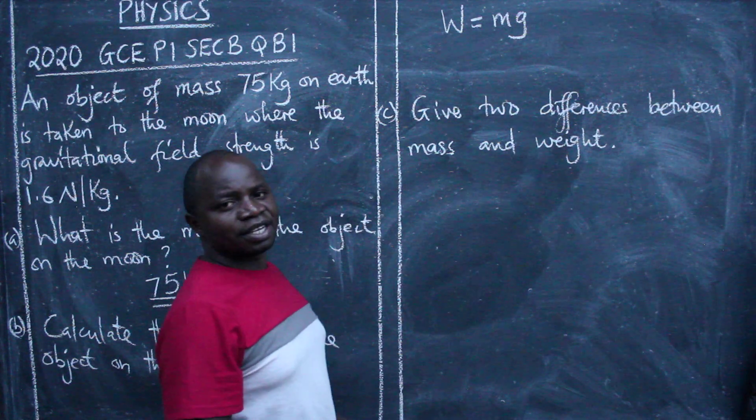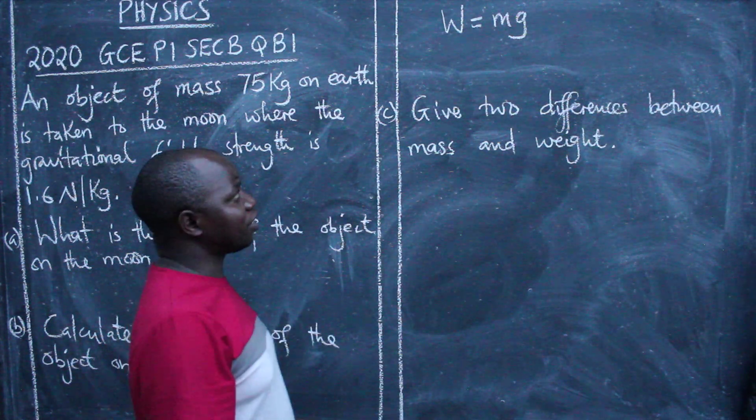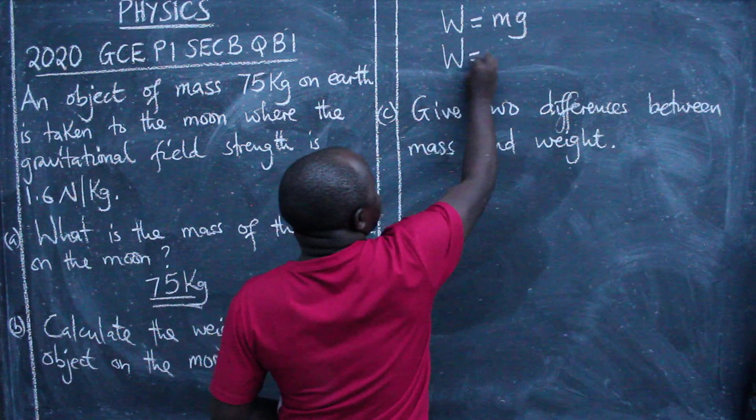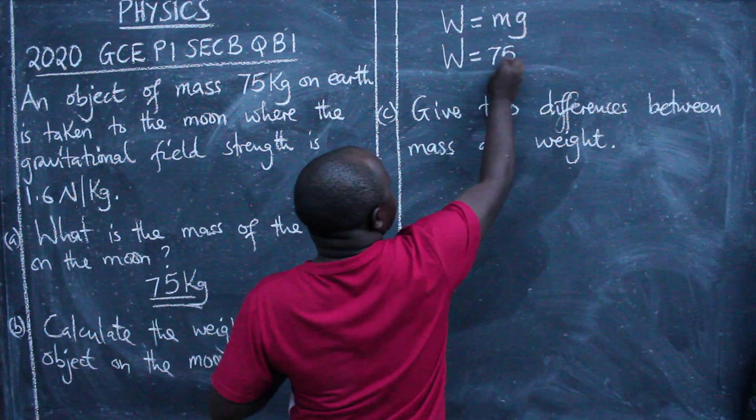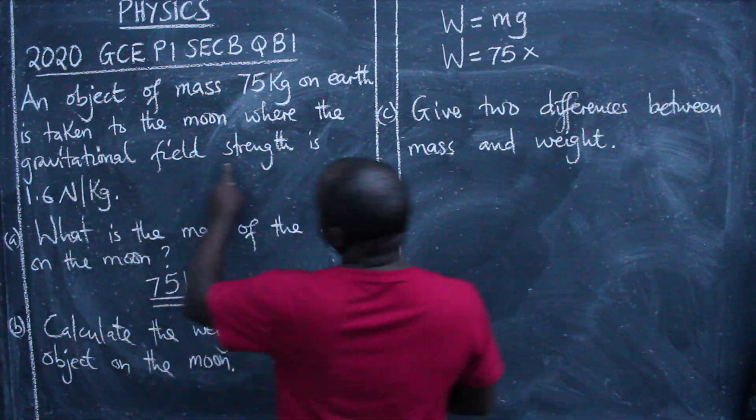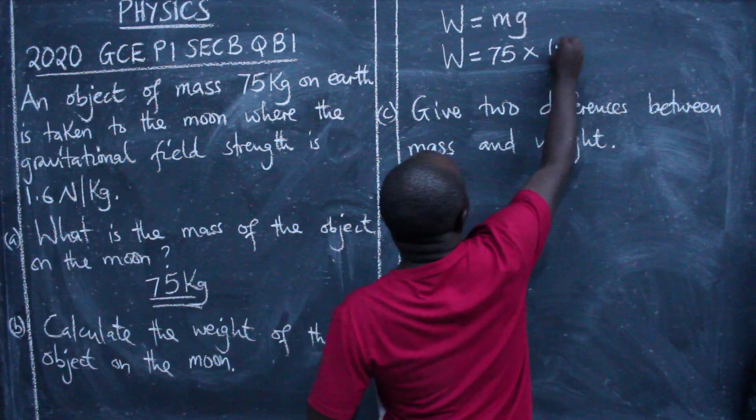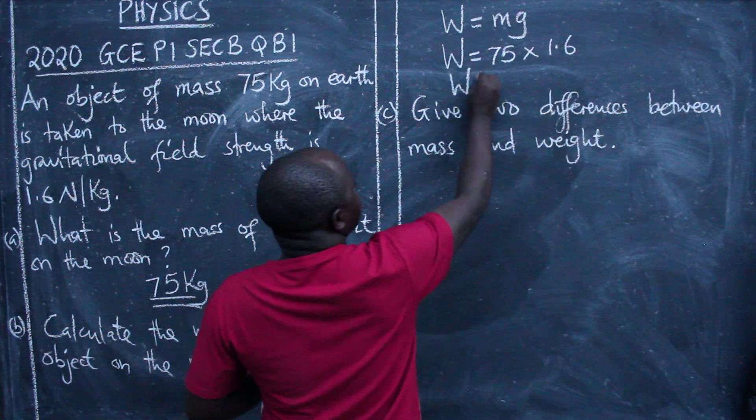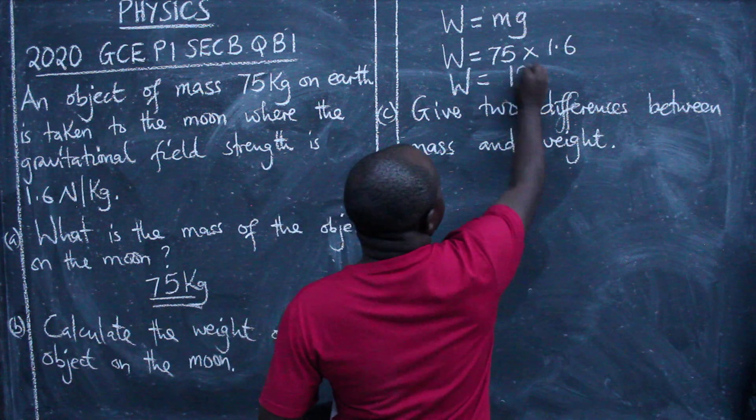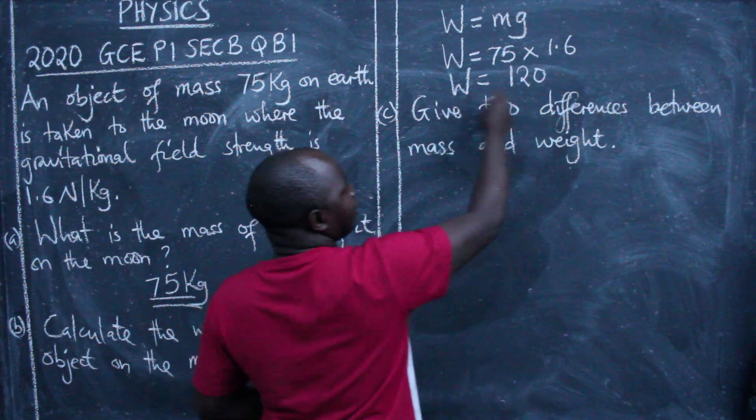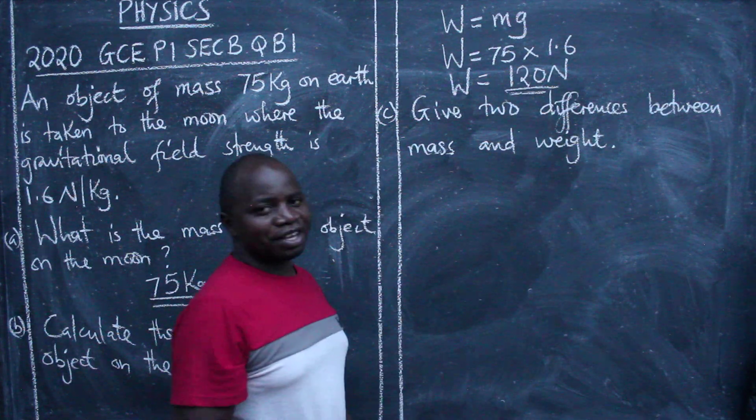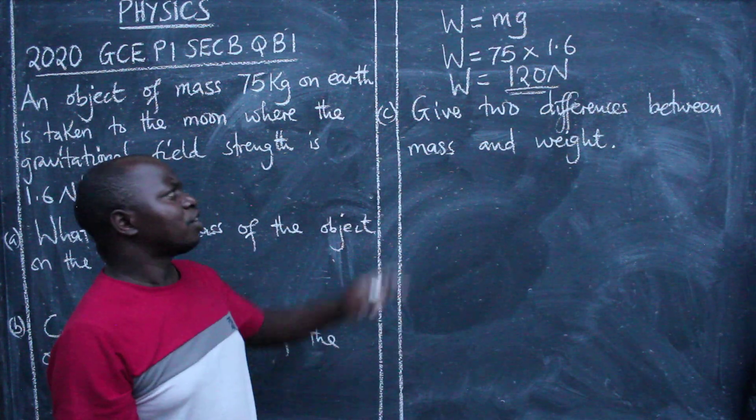So now we are going to say weight will equal, what is the mass? 75, multiplied by the gravitational field strength 1.6. When we multiply, 75 multiplied by 1.6, we are going to get 120. Remember, weight is measured in Newtons. So that will be the correct answer.